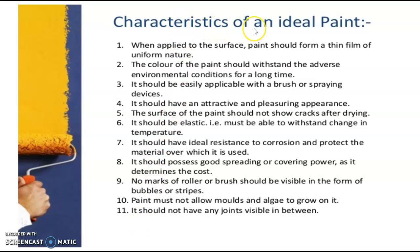Next, we will move to the characteristics of an ideal paint. The paint should have high durability when applied on the surface, be weather resistant, and attractive in nature. The paint must not allow mould or algae growth on it, and should not have any visible joints or cracks. It should be elastic in nature and able to withstand changes in temperature. It should have ideal resistance to corrosion, protect the material over which it is used, and possess good spreading and covering power.